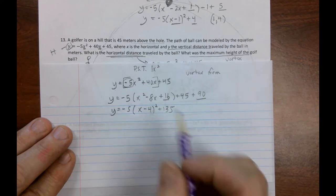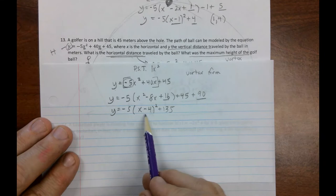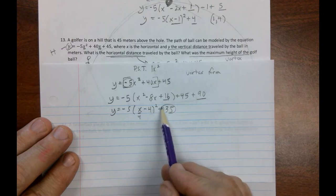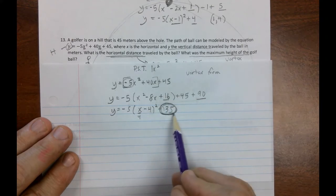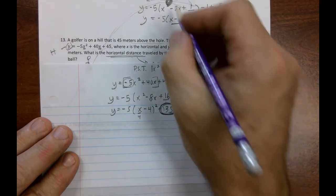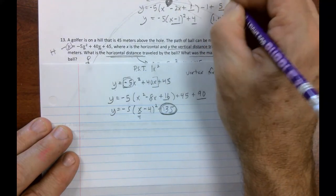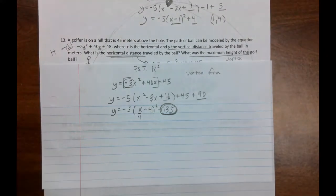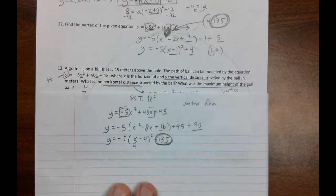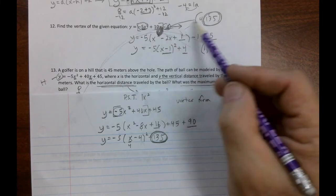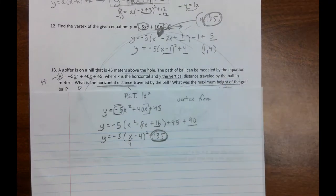So, I get negative 5(x minus 4) squared plus 135. So, if we notice, at the point where x has traveled 4 meters, my maximum height would then be 135. And so, the vertex right here is 4 comma 135, telling us there's our height right there. Whoops, I was off the page. So, yeah, our vertex is 4, 135, maximum height.